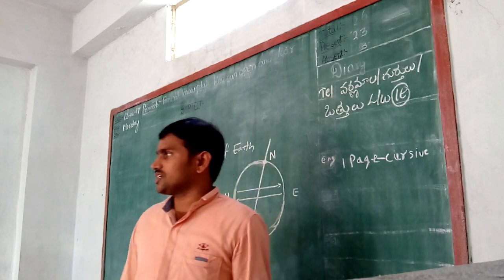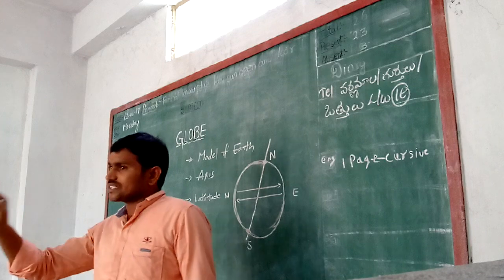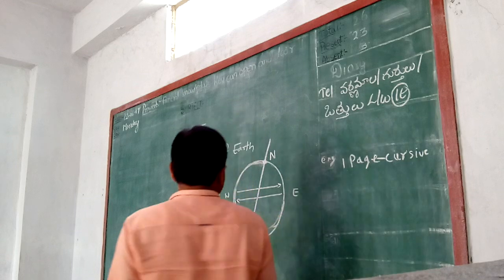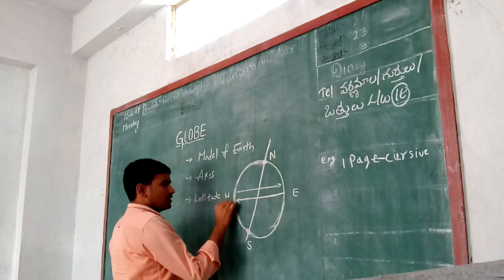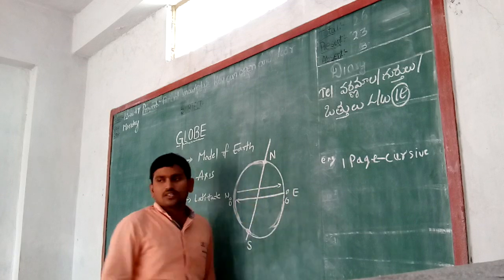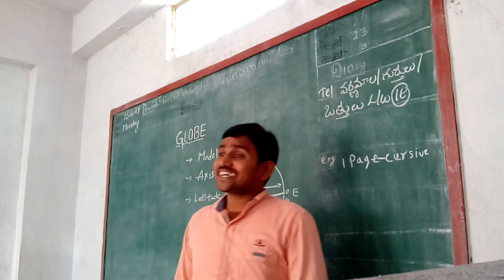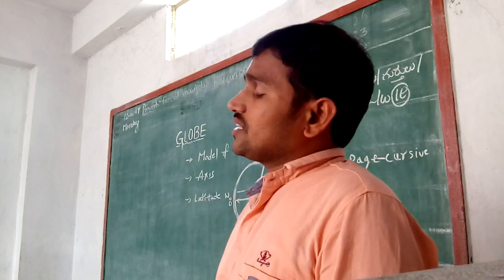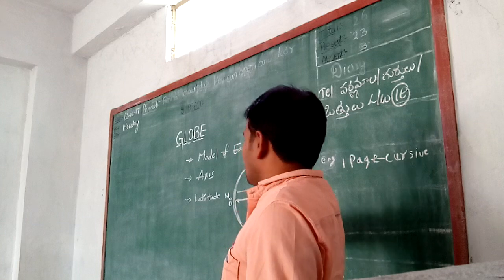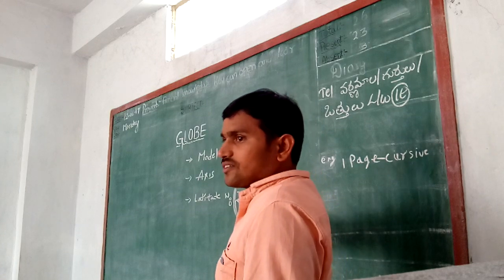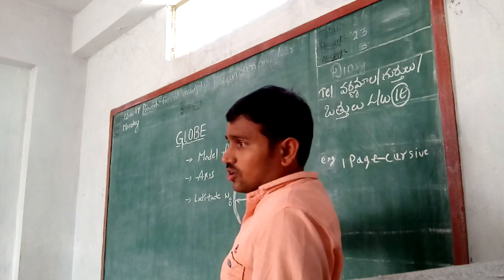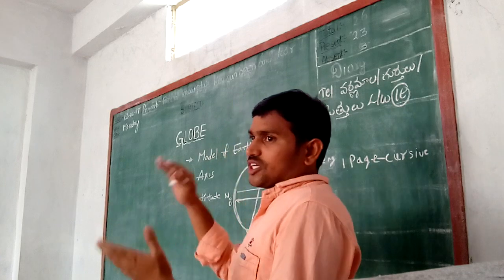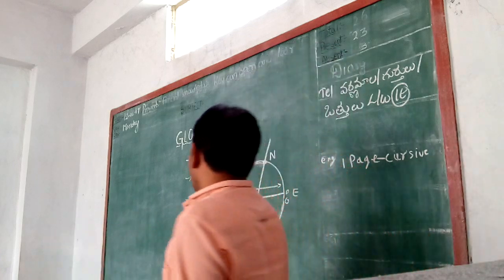The longest latitude is zero degrees latitude. This zero degrees latitude is called the equator. The equator divides the earth or globe into two equal halves. These two equal halves or parts are called hemispheres.